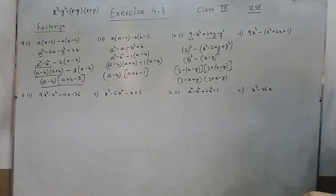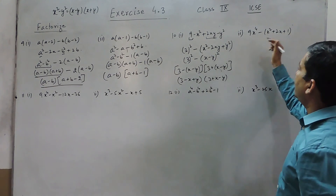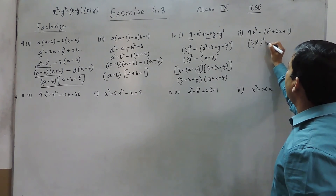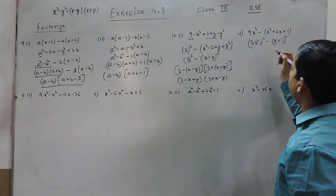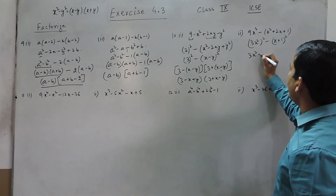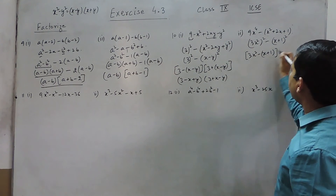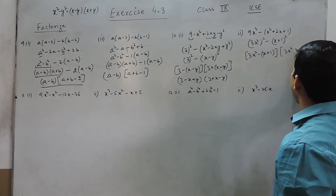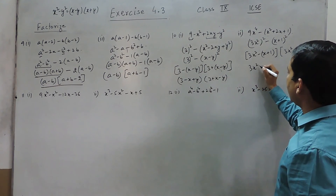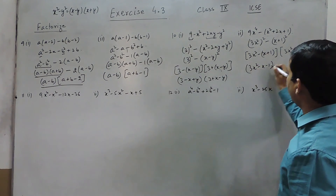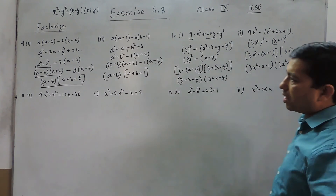It is very clear in this question that we will have to take this as a perfect square. So this is 3x squared whole squared minus x plus 1 to the whole squared. So this is 3x squared minus (x plus 1) as one factor and 3x squared plus (x plus 1) as another factor, giving 3x squared minus x minus 1 as one factor and 3x squared plus x plus 1 as the other factor.